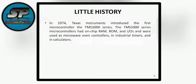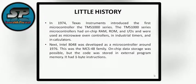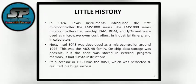A little history: in 1974, Texas Instruments introduced the first microcontroller, the TMS-1000 series. The TMS-1000 series microcontrollers had on-chip RAM, ROM, and input-outputs, and were used as microwave oven controllers, in industrial timers, and in calculators. Next, Intel 8048 was developed around 1976 — this was the first MCS-48 family. In this, on-chip data storage was possible, but the code was stored in external memory, i.e., it had no on-chip ROM. It had one-byte instructions. Later, in 1980, the successor of the 8048 was the 8051, which was perfected and resulted in a huge success.